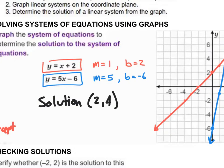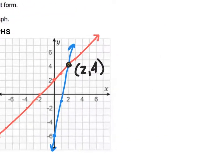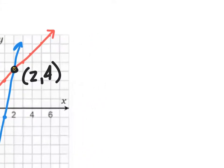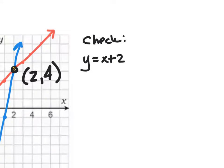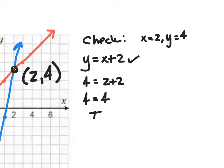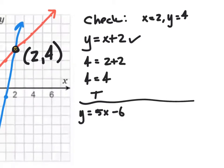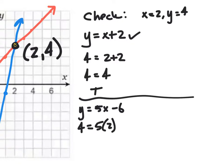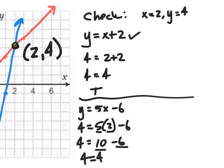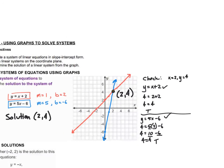Now what I can do is check to see if I'm right. Let me check the first equation, which was y equals x plus two. What I know is that my solution is x equals two and y equals four. So if I plug those in: four equals two plus two, four is equal to four — that's true, so this checks out. Let's do it for the second equation: y equals five x minus six. Plugging in: four equals five times two minus six. Five times two is 10 minus six, which gives me four. Four is equal to four, so that's true — that's how we can verify that we're correct.